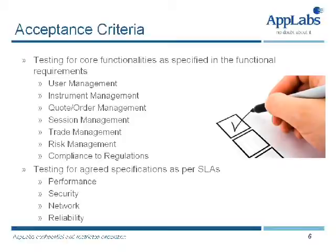You have a whole acceptance criteria that must be agreed upon to make sure you have a product that's thoroughly tested and everyone agrees it has been. First, we have core functionalities that you must test for — in terms of user management, you're dealing with users associated with a trading platform like specialists, market makers, and floor brokers. A typical user management module covers login credentials, assigning symbols to specialists and market makers, defining trading rights, and defining trading allocations by identifying special users.